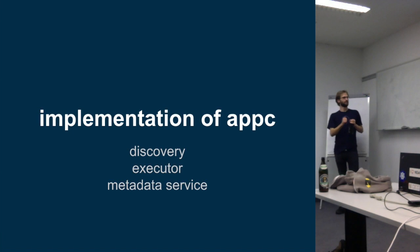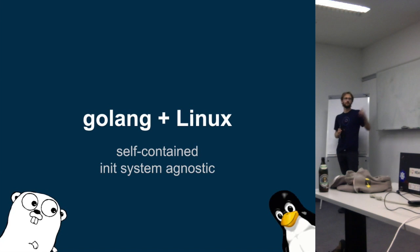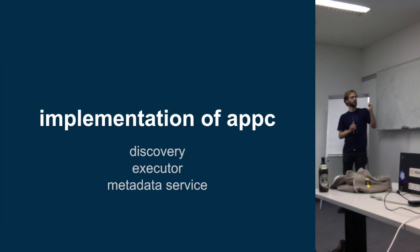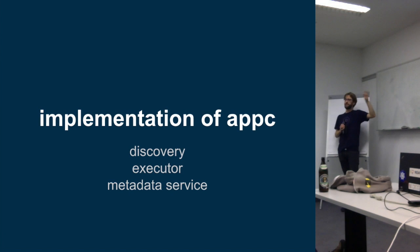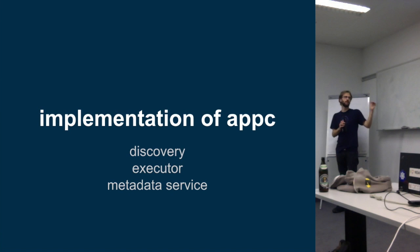So let's talk about Rocket. Rocket is the first implementation of AppC, released in tandem with the spec. Specifically, Rocket implements the image discovery part of the spec, the executor component for running applications, and the metadata service. Rocket actually takes advantage of a lot of the libraries in the spec repository — the same libraries that AC tool uses — so it's very closely aligned with the spec as it develops.